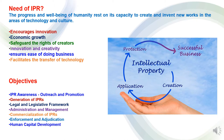Now we will go through the need of intellectual property rights and objectives. The progress and well-being of humanity rests on its capacity to create and invent new works in the areas of technology and culture. There is a need for intellectual property rights to protect new inventions. First, intellectual property rights encourage innovation — the legal protection of new creations encourages commitment of additional resources for further innovation. The second need is for economic growth: the promotion and protection of intellectual property creates new jobs and industries and enhances the quality of life.